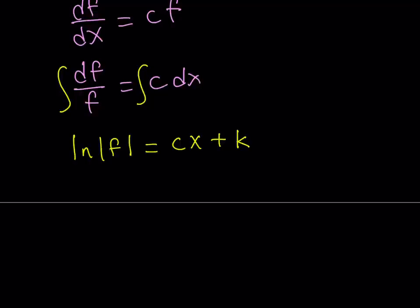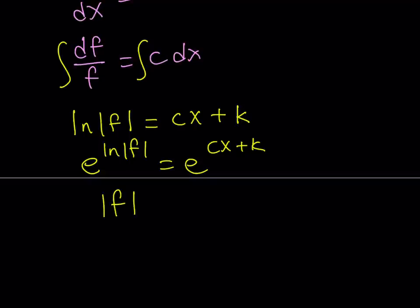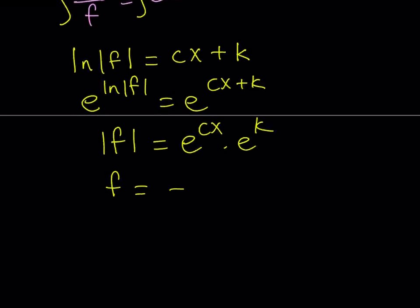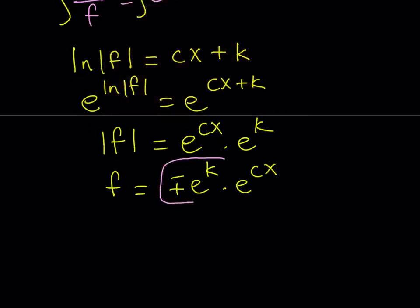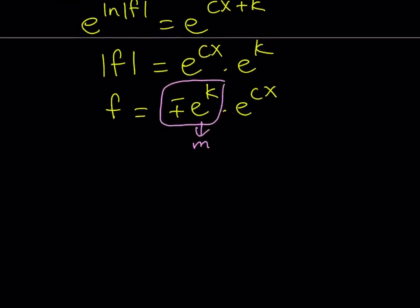Now we have this equation — we got rid of all the derivatives. Let's isolate f: I'll exponentiate both sides to get rid of the ln. This gives us the absolute value of f equals e to the power cx multiplied by e to the power k. I can write this as f equals plus or minus e to the power k times e to the power cx. Since e to the power k is a constant, with the plus-minus sign, I'll call that constant m. So f of x equals m times e to the power cx.